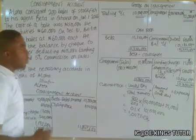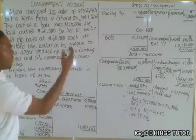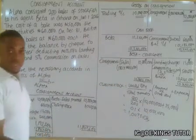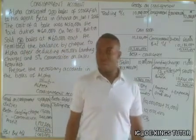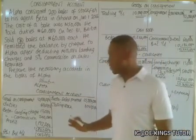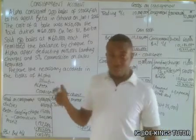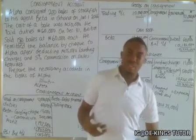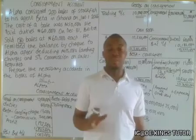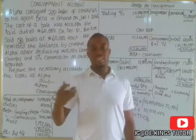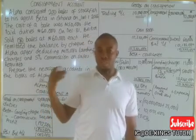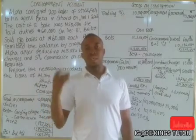That is basically how to prepare the consignment account in the book of the consignor. Ensure you have watched the previous video to understand this more fully. If you have any questions relating to this, comment in the comment section on my YouTube channel. Like this video and tell me where you have issues. I am going to solve more questions relating to this, including more complex ones. Thank you very much.